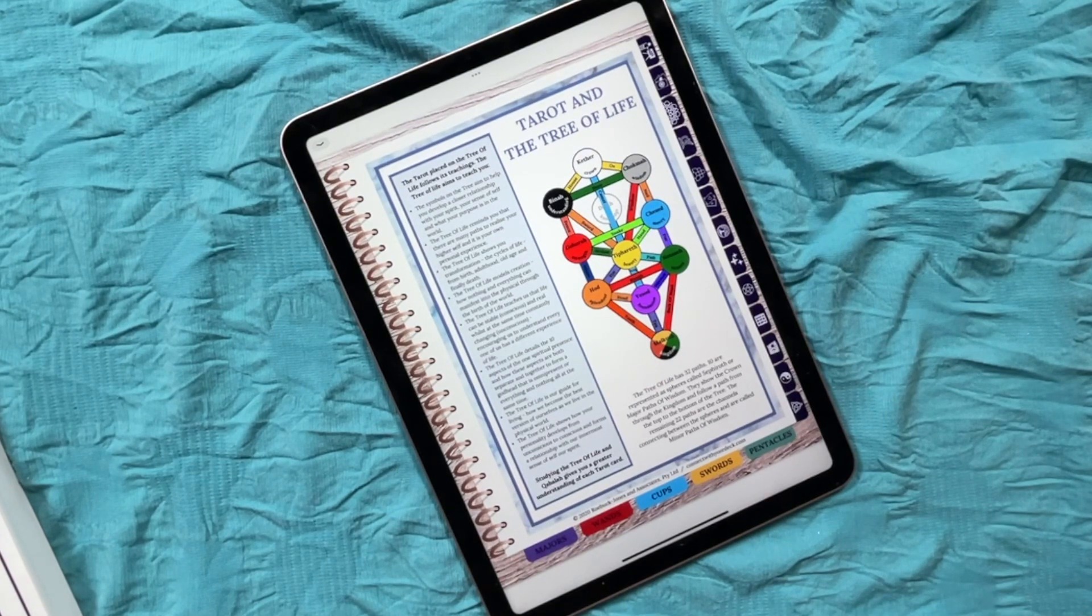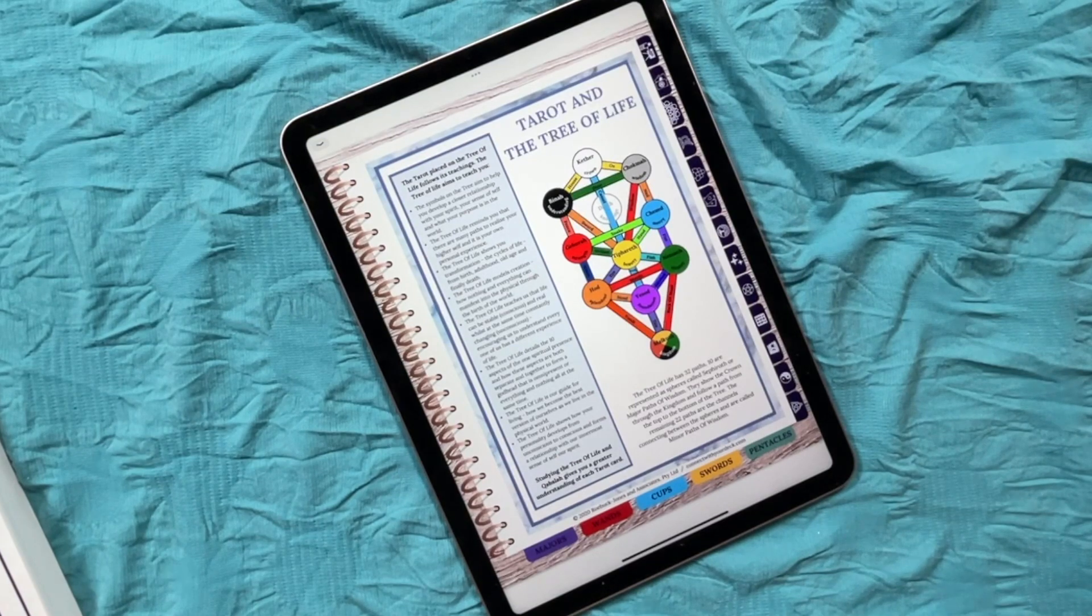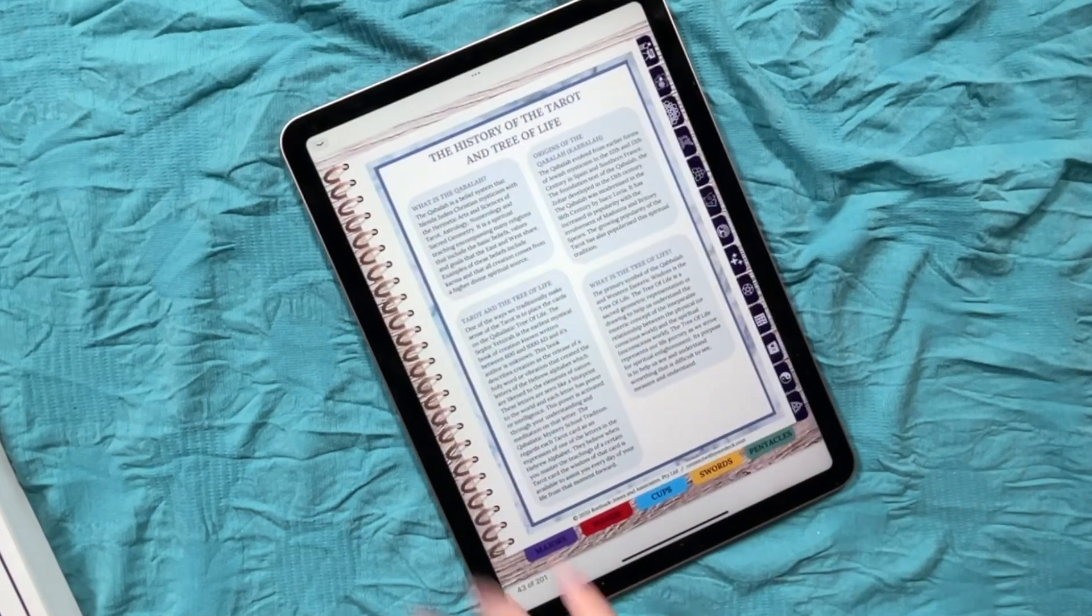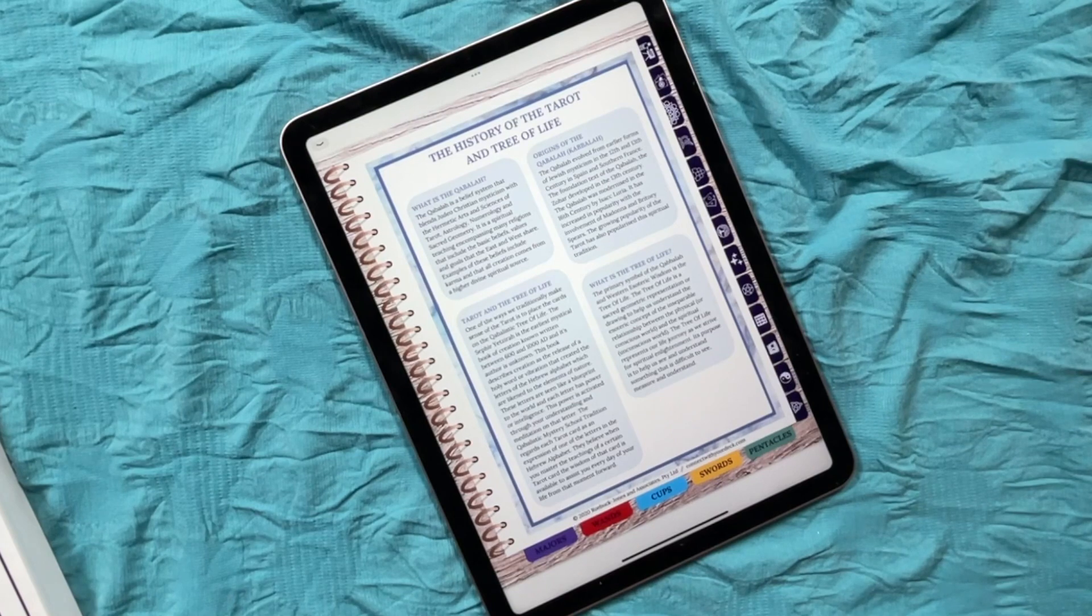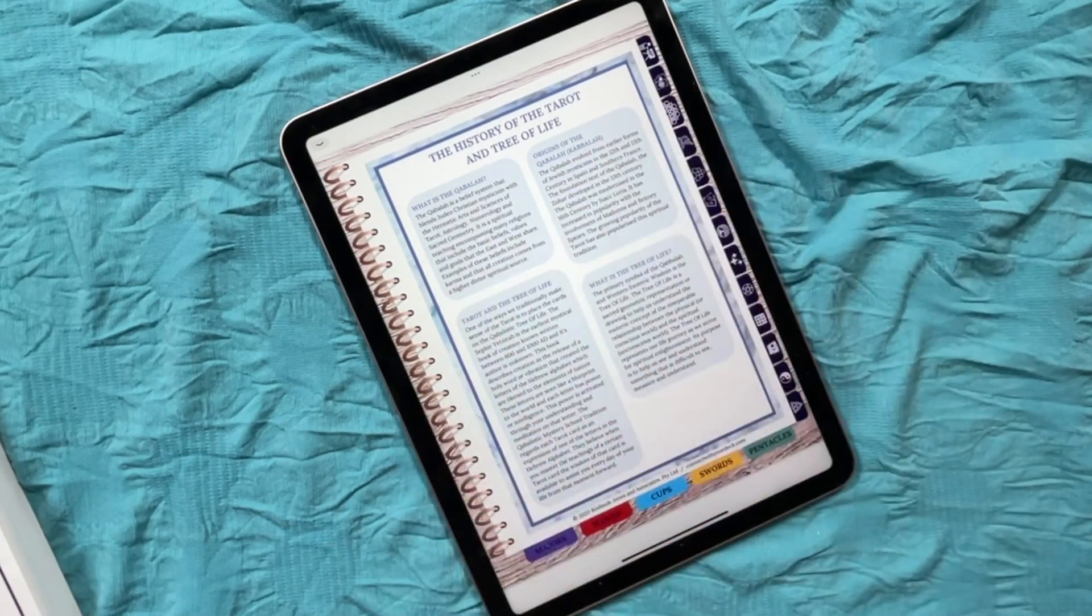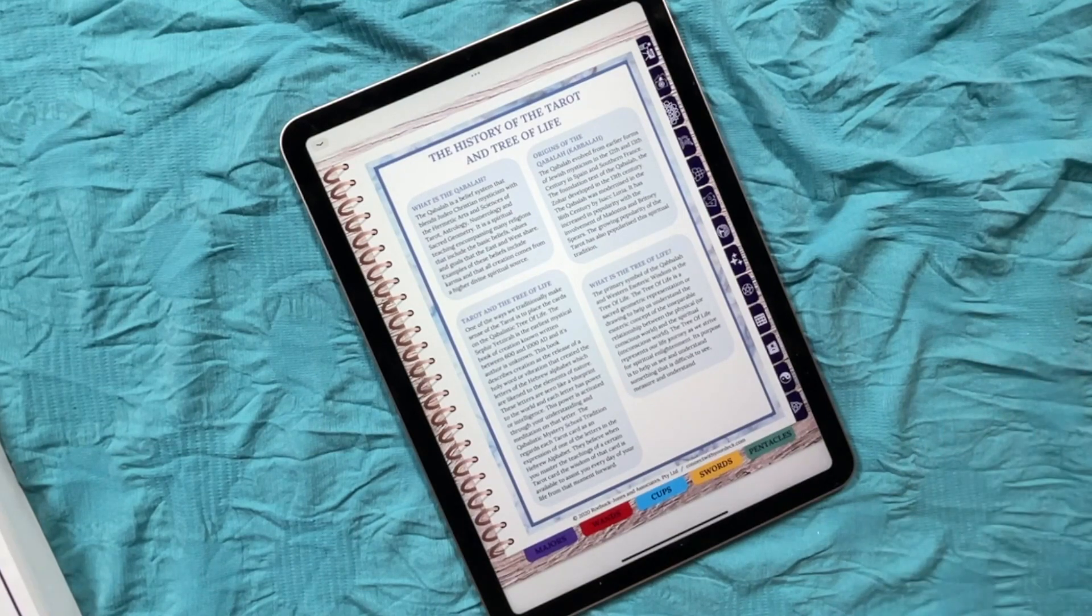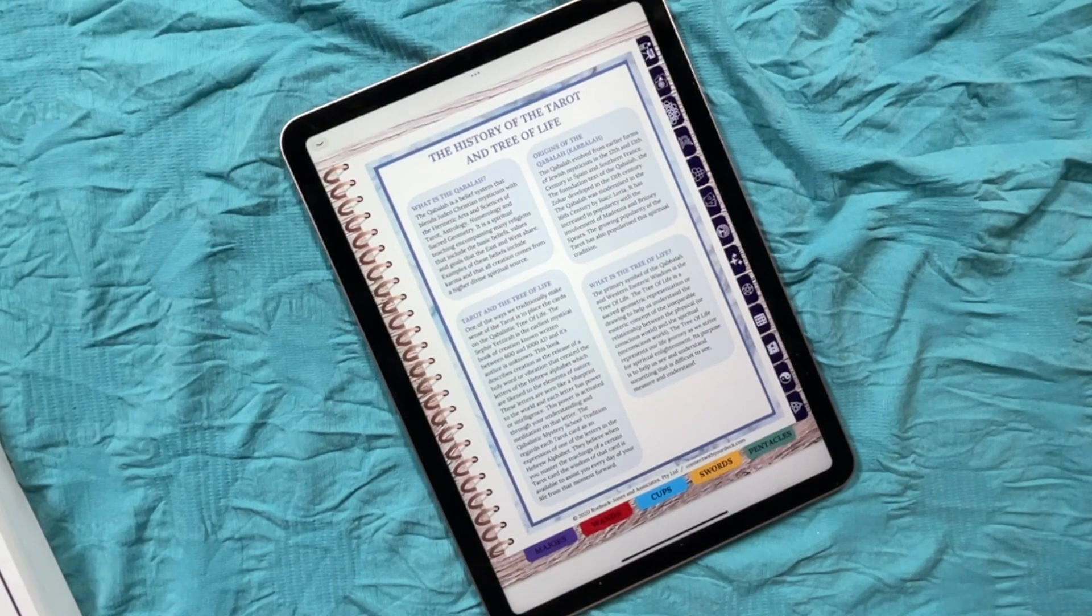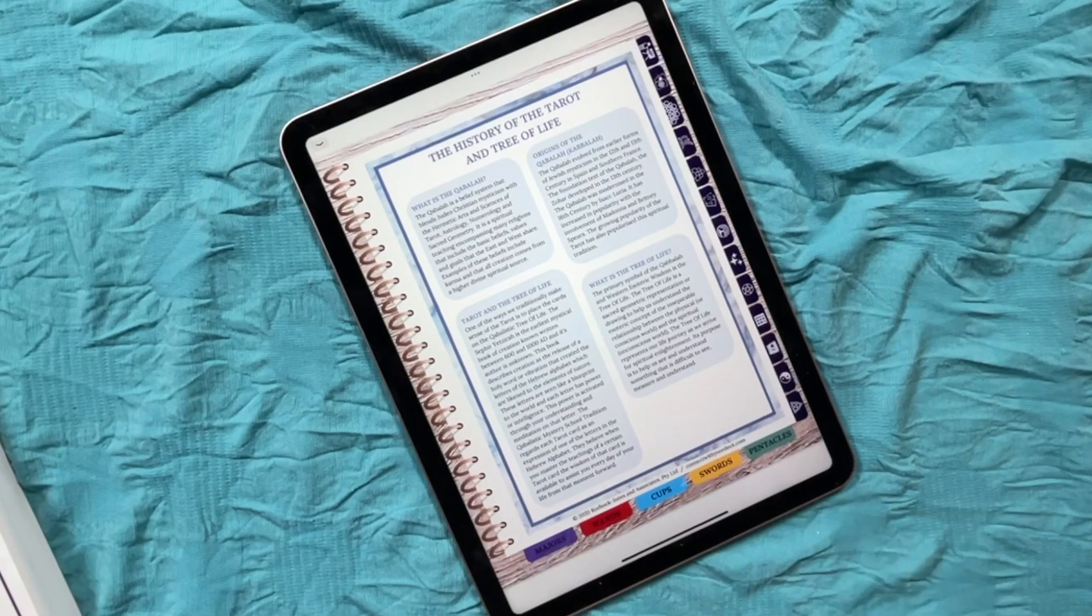The Tree of Life shows us how your personality develops from unconscious to conscious and forms a relationship with our innermost sense of self and our spirit. Studying the Tree of Life in the Kabbalah gives you a greater understanding of each tarot card and the tarot cards are placed on the Tree of Life. There's 10 spheres which are the Sephirot and there are 32 paths or the paths of wisdom. So I've got the history of the Tree of Life here and the association of the Tarot with the Tree of Life and then the minor and major paths of wisdom.